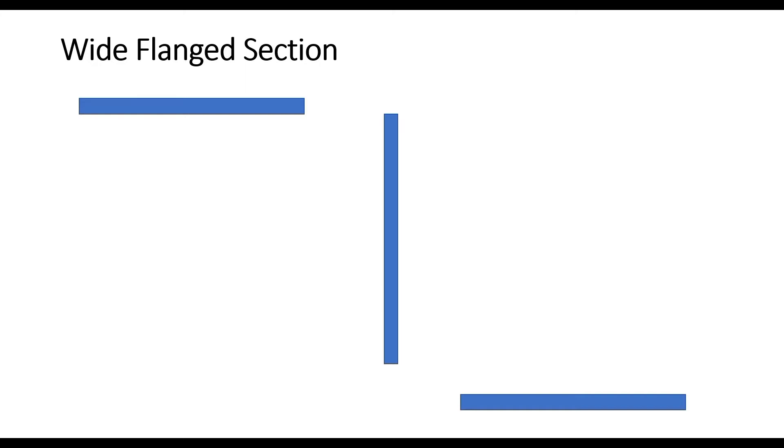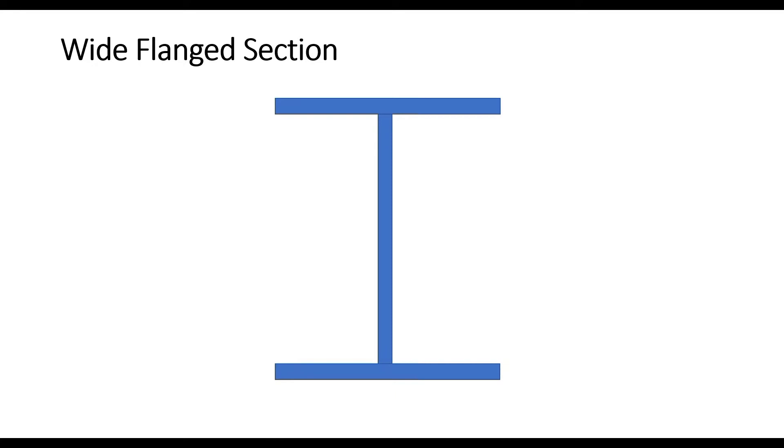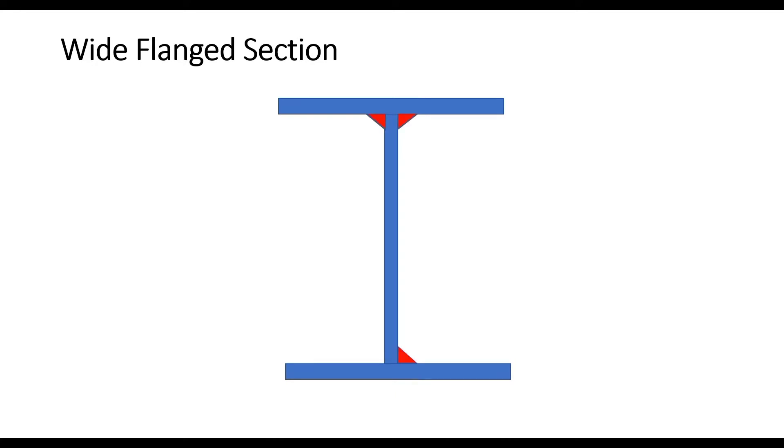For carrying heavy loads, sections need to be built out of plates. Let us say that we intend to build a wide flange or I-shaped section. We cut out three parts from a plate: the first part for the top flange, the second part for the web, and the third part for the bottom flange. All these parts are assembled together to form the wide flange section, and the assembled parts are then connected by welding. Similarly, other shapes like channel, tube, angle, etc. can also be built by assembling plate elements.